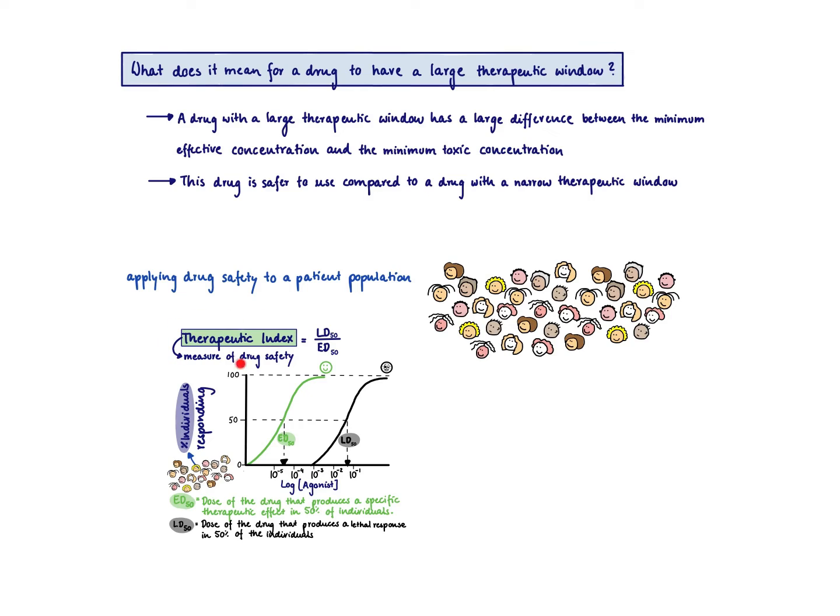What is the therapeutic index? So the therapeutic index is not a range of concentration, it's just a number. So for example, for acetaminophen, this number is 20.